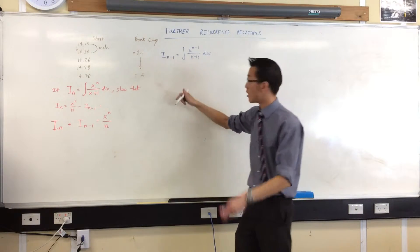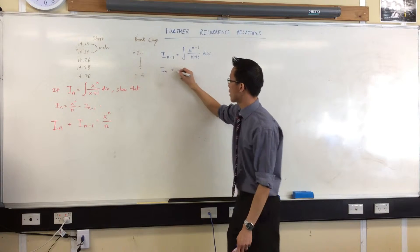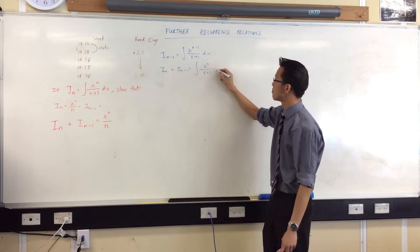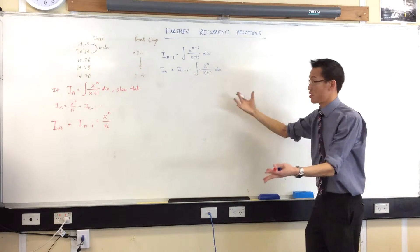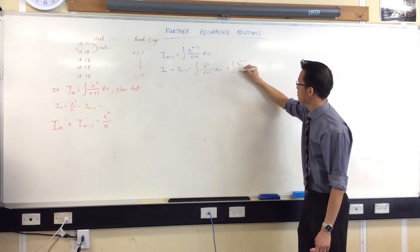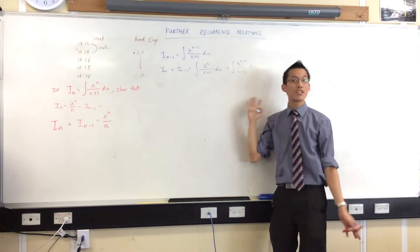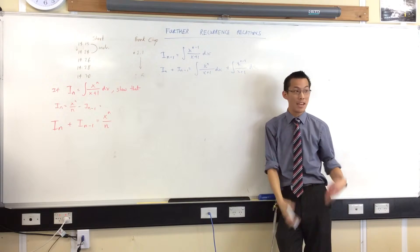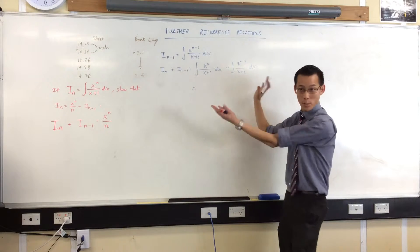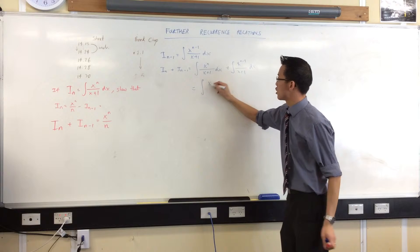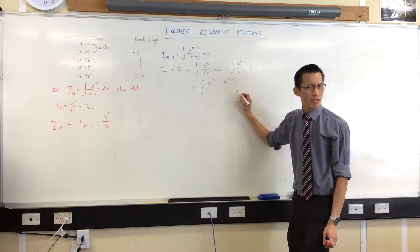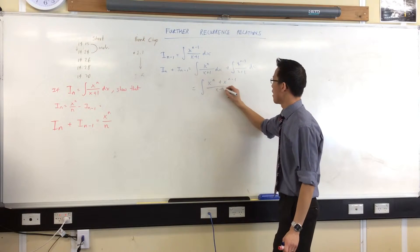i_n plus i_{n-1}. Well, they've defined i_n for us, there it is. We've just determined what the previous one is, x^{n-1}. The great thing about this is you're integrating with respect to the same variable, you've even got the same denominator. So you can take these two integrals and make one out of them. This should be (x^n + x^{n-1}) over (x+1).